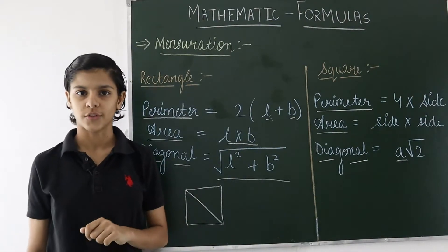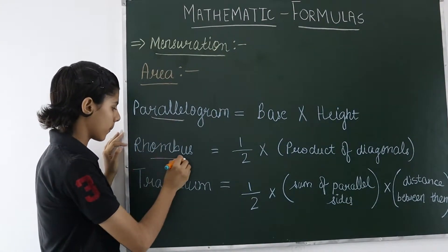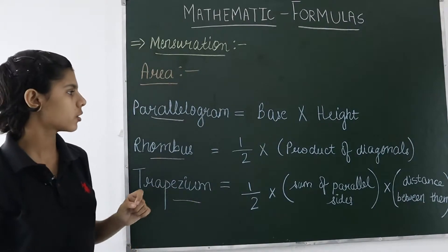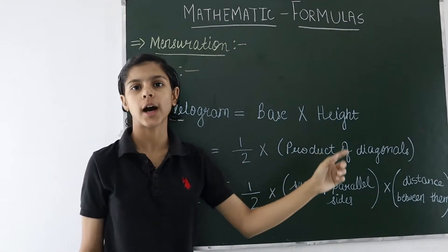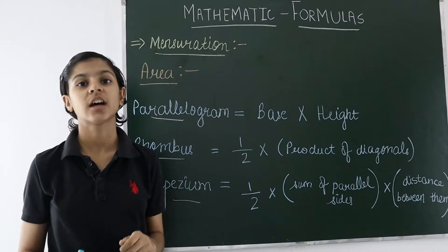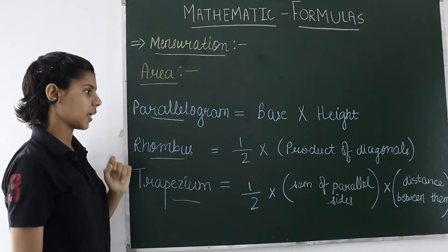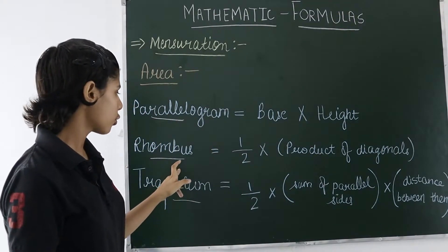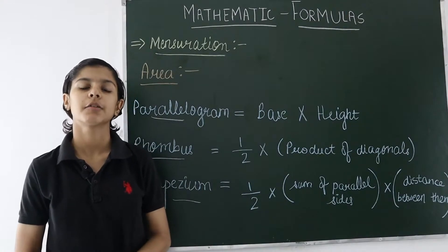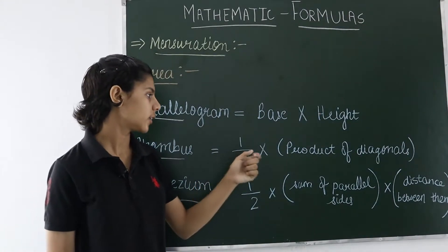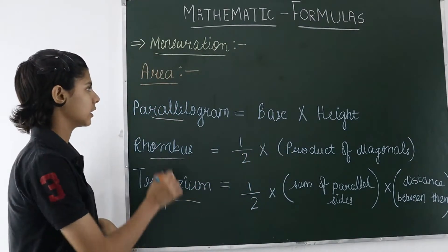Now we have the area of parallelogram, rhombus, and trapezium — these are also geometrical figures. For the area of a parallelogram, we have the formula base into height. We multiply the base and the height of the parallelogram to get the area. For rhombus, the formula is 1/2 into the product of the diagonals. We multiply the diagonals of the rhombus and then multiply that product by 1/2 to get the area.